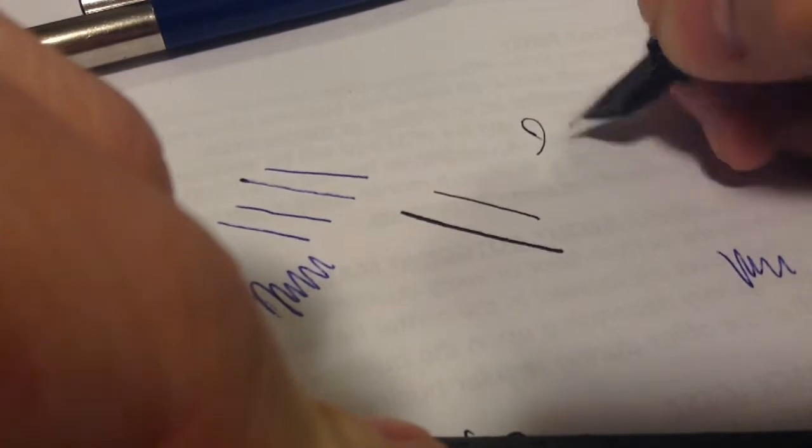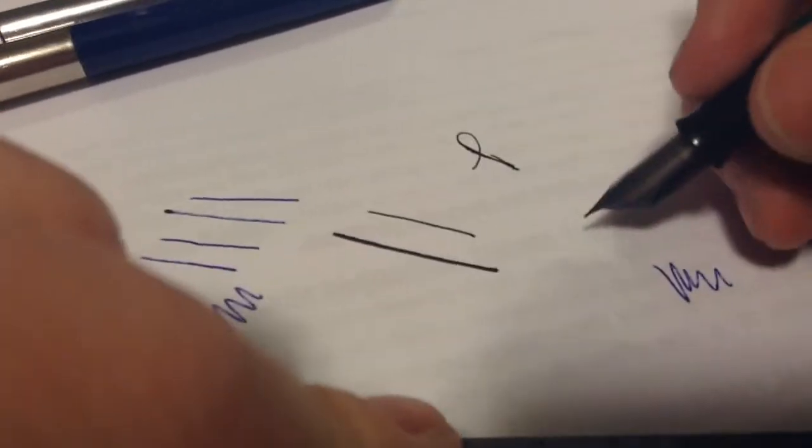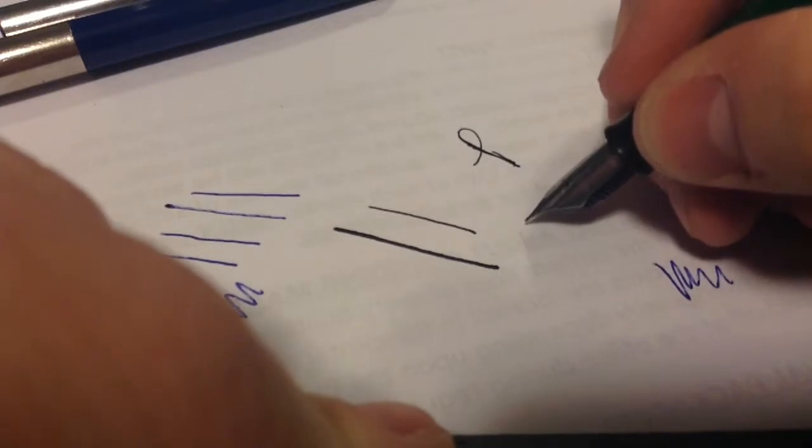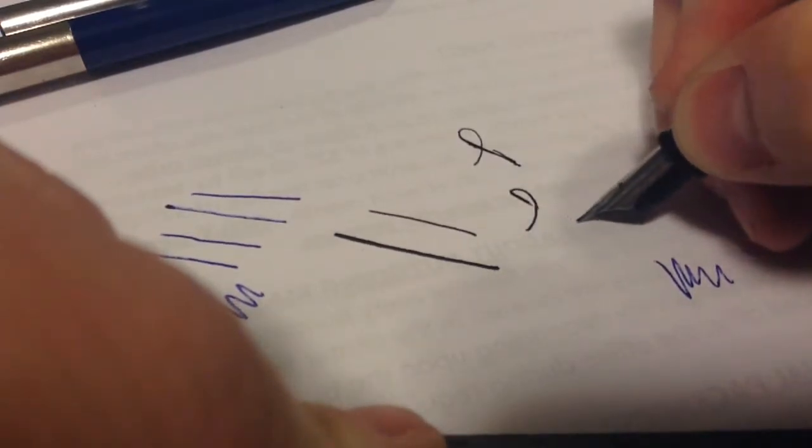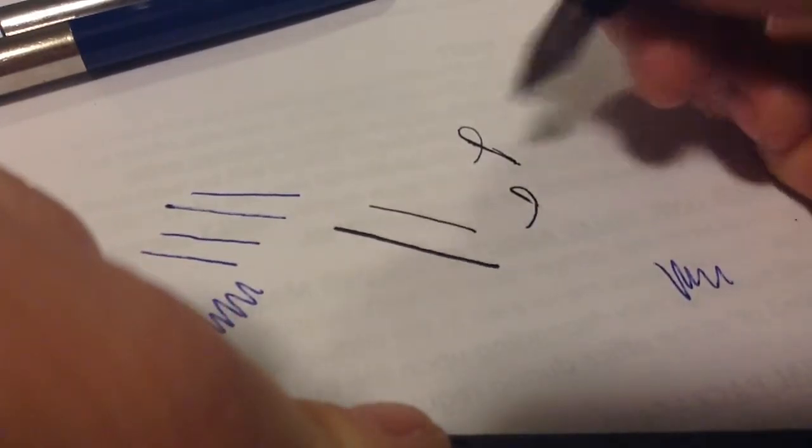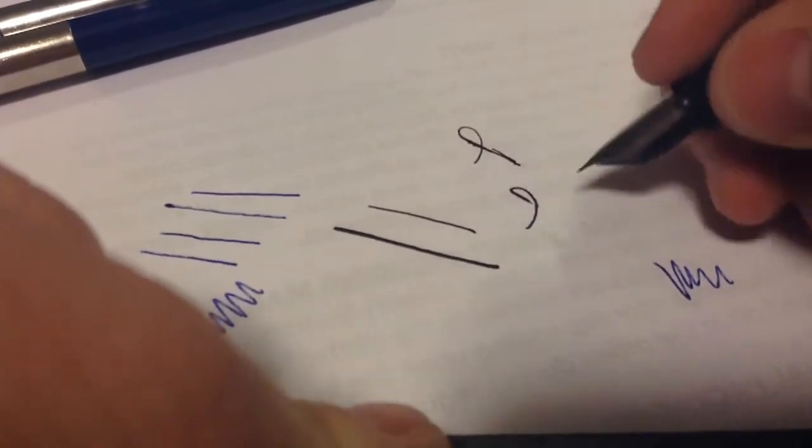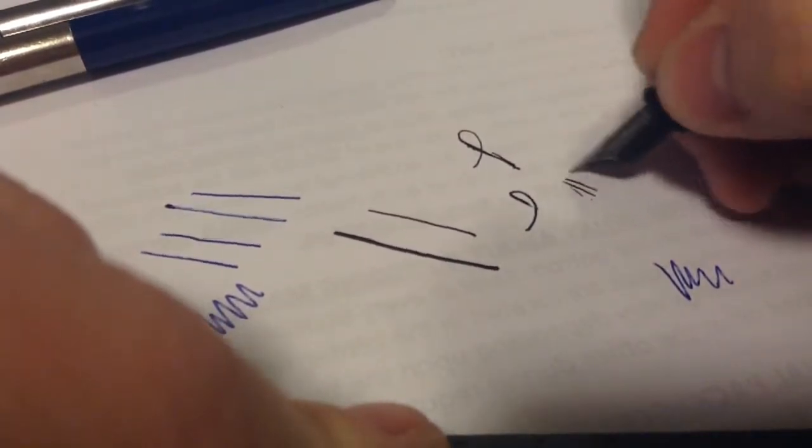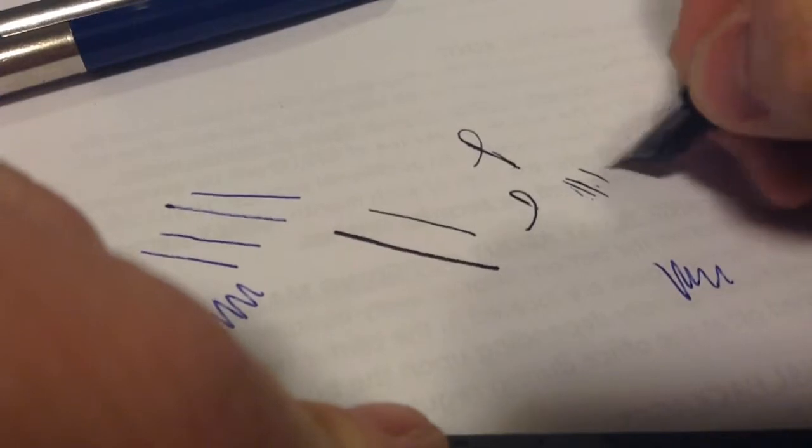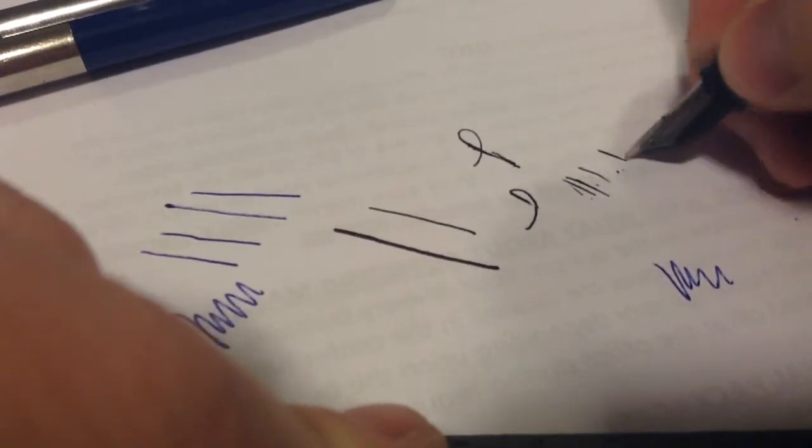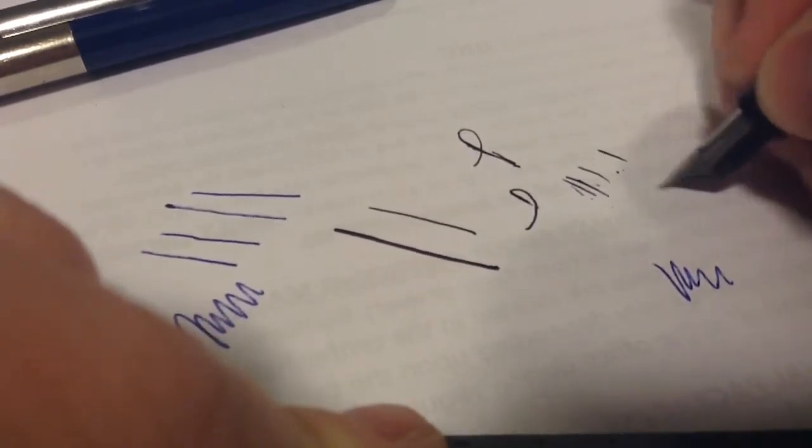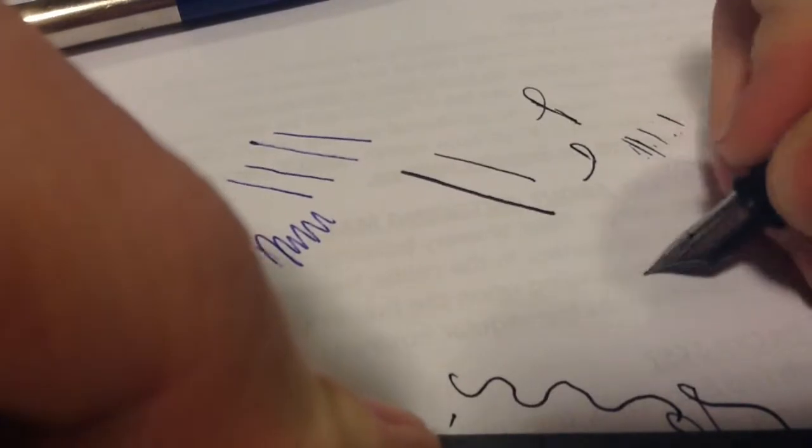And then, so when you do flourishes, oh, I broke it there. Hold on one second. So, when you do flourishes, yeah, looks like this isn't really wanting to keep up. Here we go. I got to clean this pen out some more, get it flushed out. So, sorry guys. Let me switch over to this medium one real quick here.